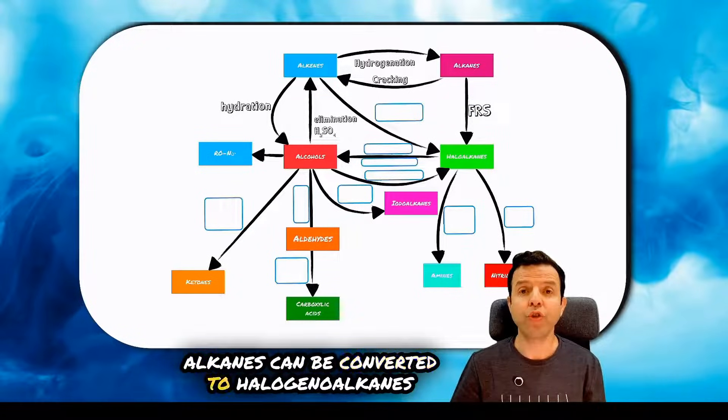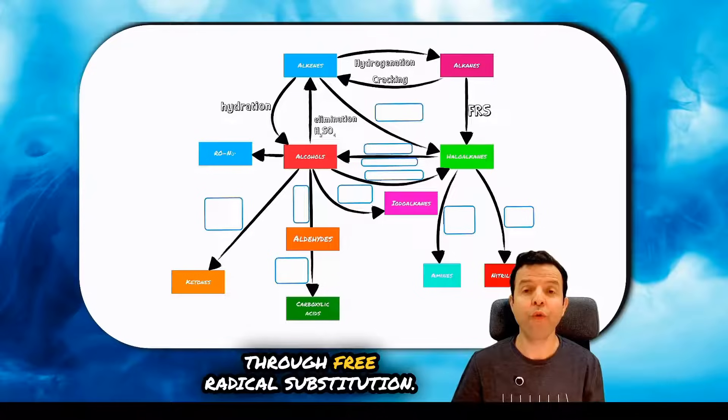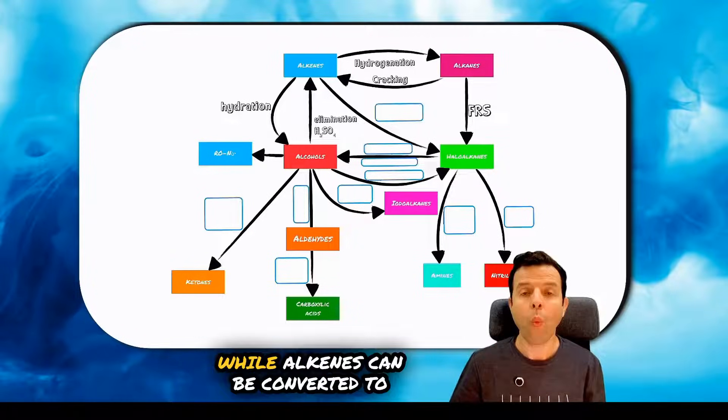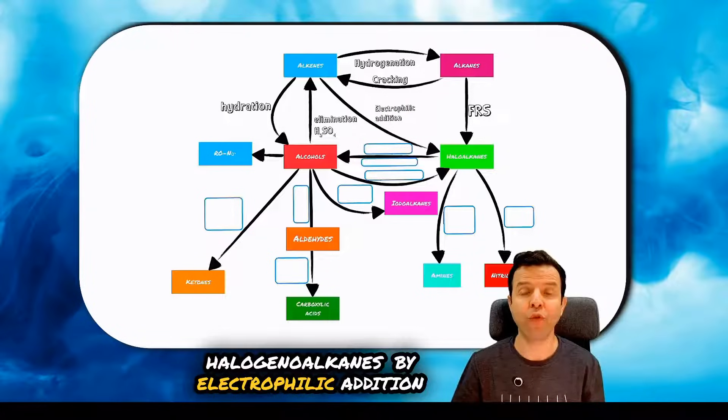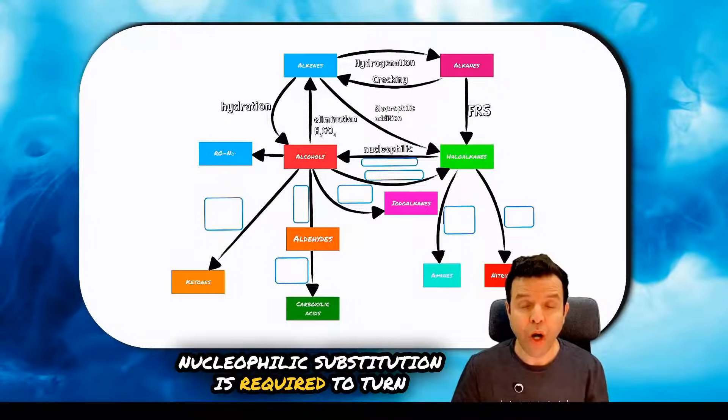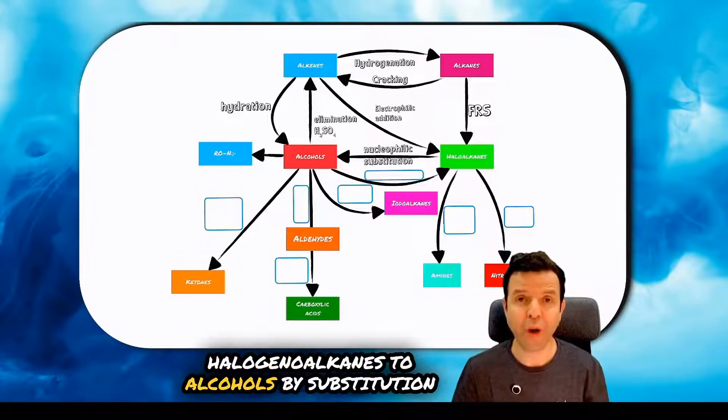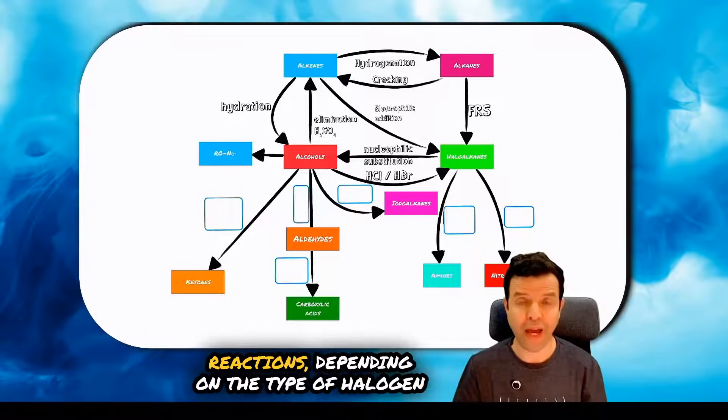Alkenes can be converted to halogenolkenes through free radical substitution, while alkenes can be converted to halogenol by electrophilic addition. Electrophilic substitution is required to turn halogenolkenes to alcohols by substitution reactions.